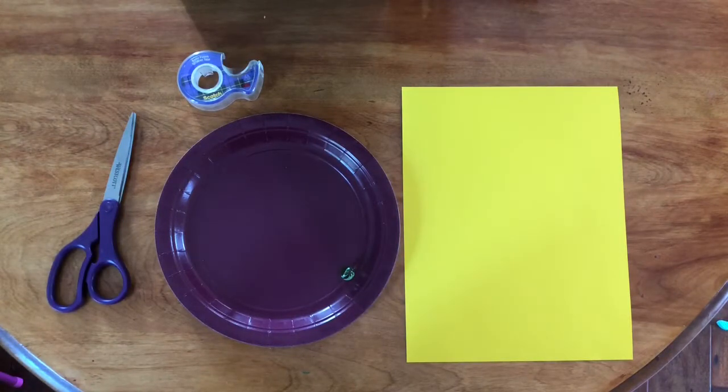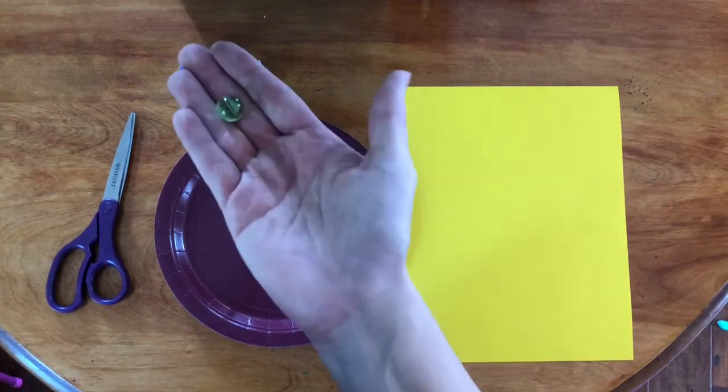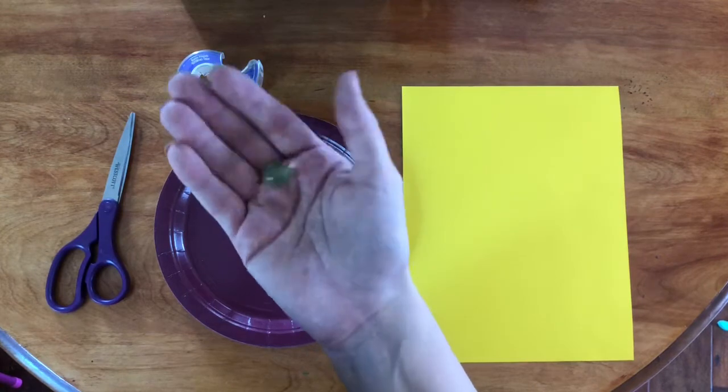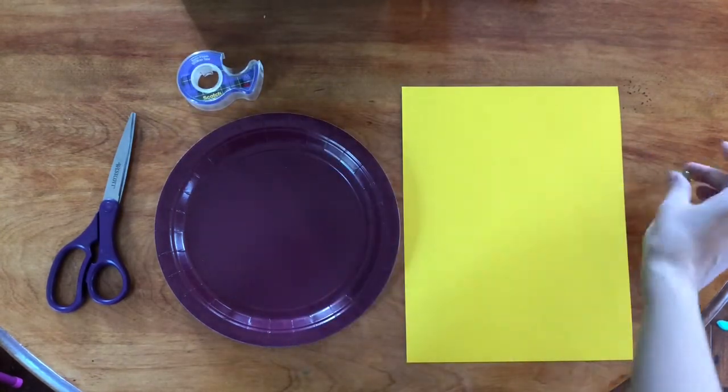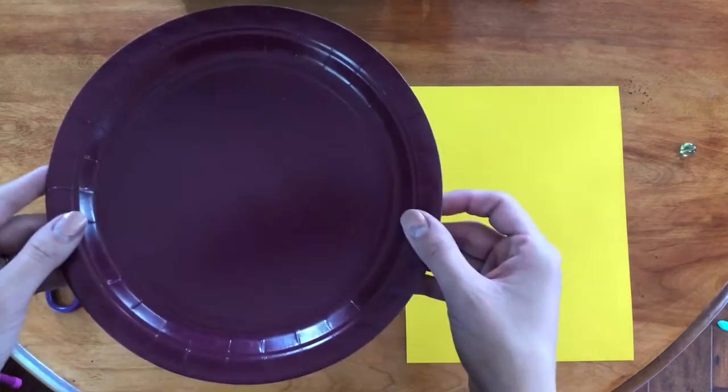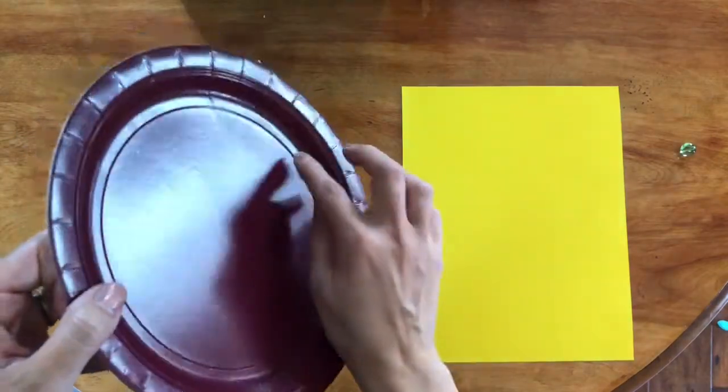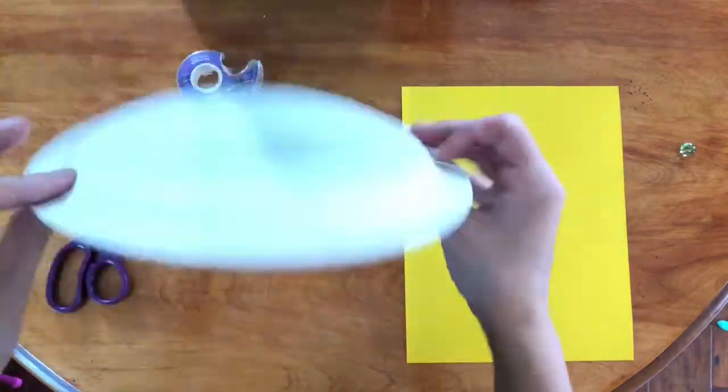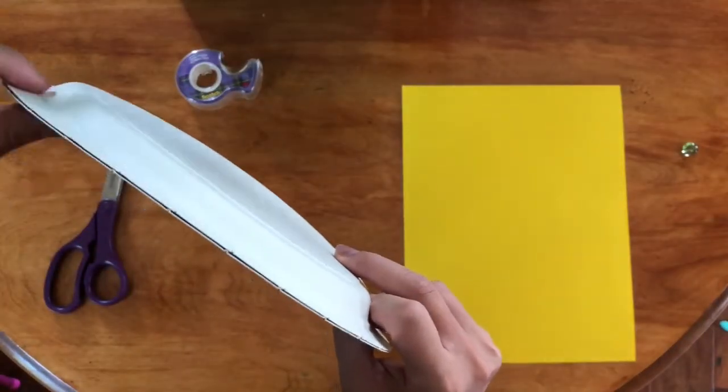For this project you will need a marble, a pom-pom, a small ball, or anything spherical that rolls. You'll also need a paper plate, styrofoam plate, or even a real plate, as long as it has a little divot so your marble doesn't run off.